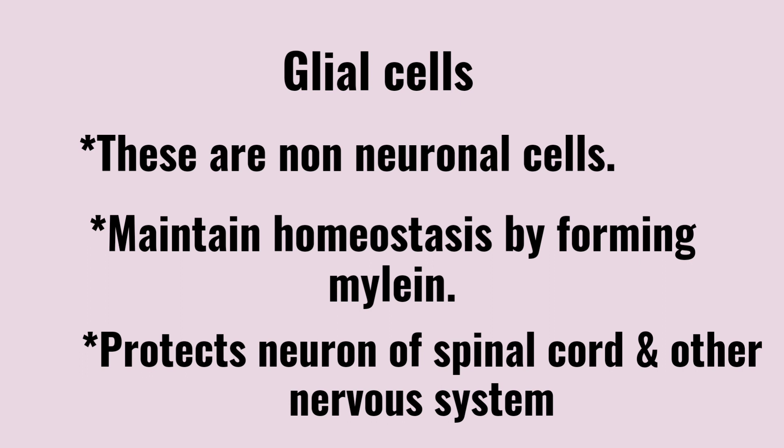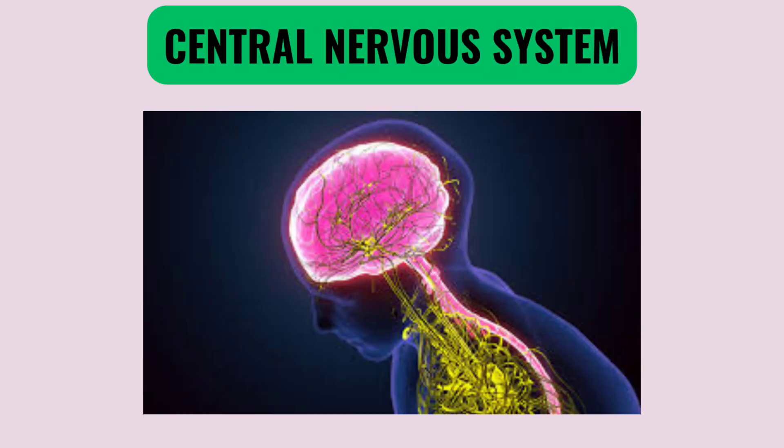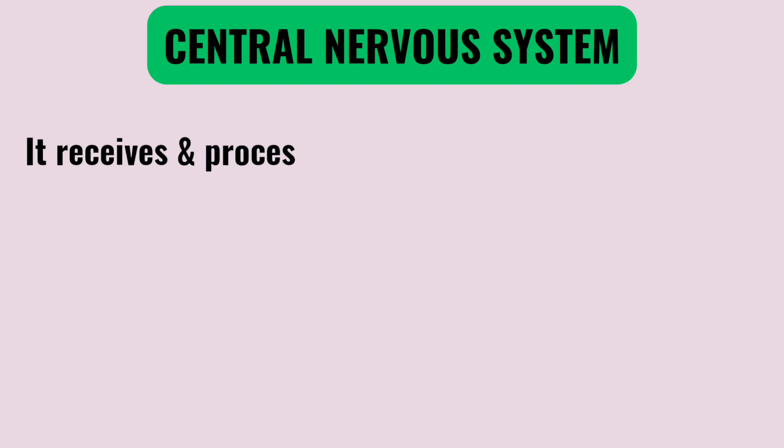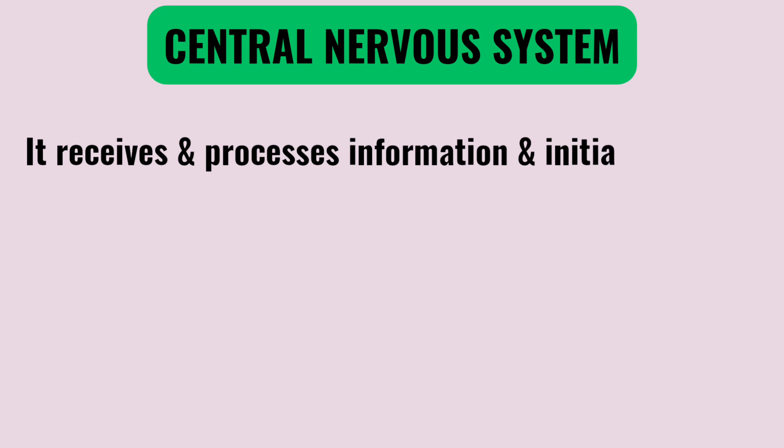Now, we are going to discuss the CNS and PNS in detail. First, the CNS: the CNS is the brain and spinal cord combined system. The central nervous system receives and processes information and initiates action. It means external or internal signals that you receive are then processed, and then an action is produced.